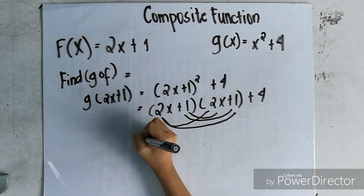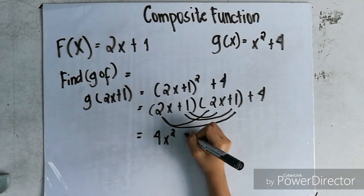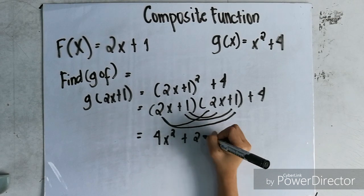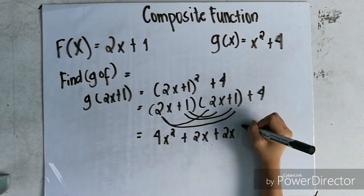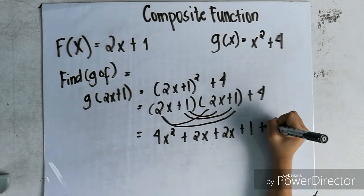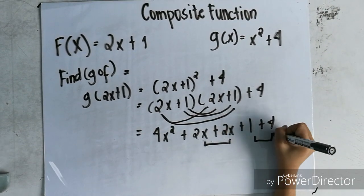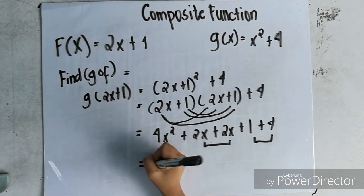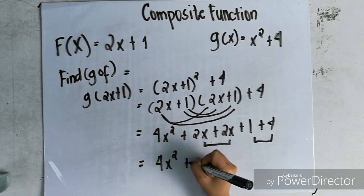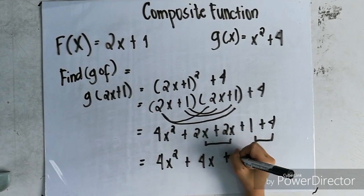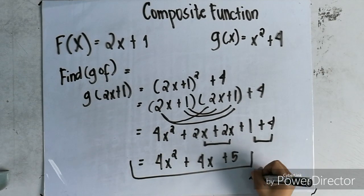Use the FOIL method to distribute: 2x times 2x equals 4x squared, 2x times 1 equals 2x, and 2x times 1 equals 2x, and 1 times 1 equals 1. Combine like terms: 4x squared plus 4x plus 5. This is the final answer.